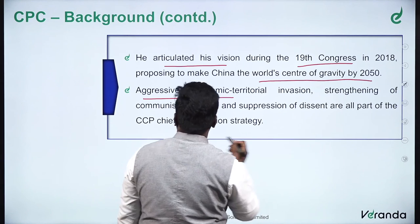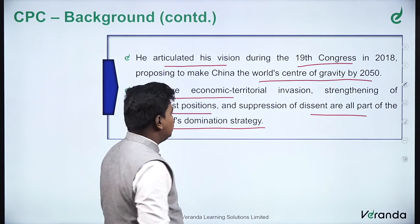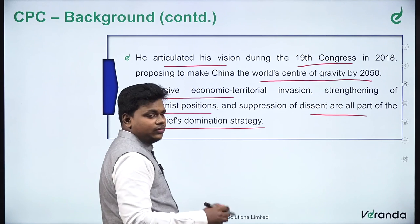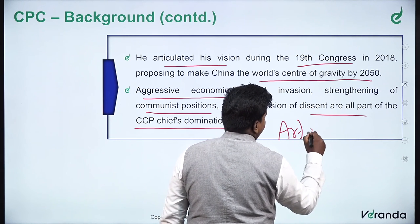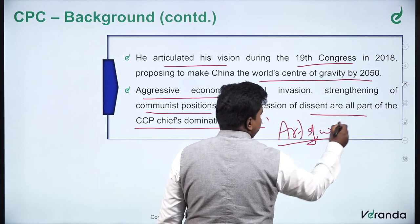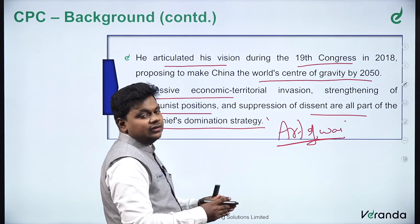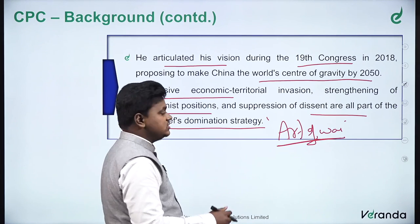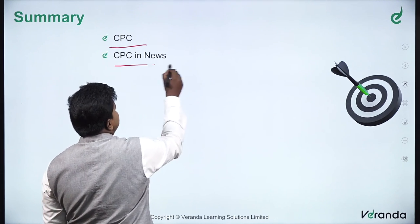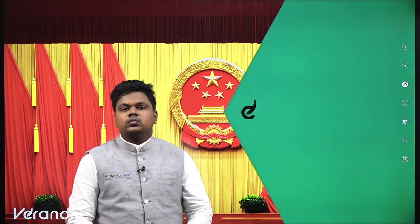Aggressive economic and territorial expansion, strengthening of communist positions, and suppression of dissent are all part of the CCP's chief dominating strategy. Aggressive economic policies and debt-trap diplomacy are part of these Chinese policies. There is an ancient book called the Art of War, written in ancient China, and even today the Chinese government pursues the principles described in that book — including aggressive warfare and being hostile with neighbors. That concludes this lesson. We have seen the CPC, why the CPC is in the news, and the background of the Communist Party of China. Thank you and have a nice day.